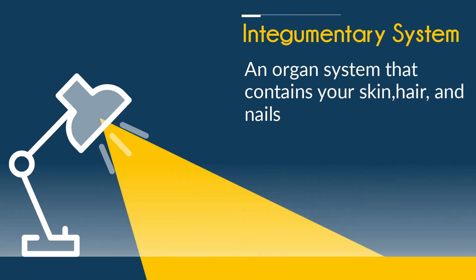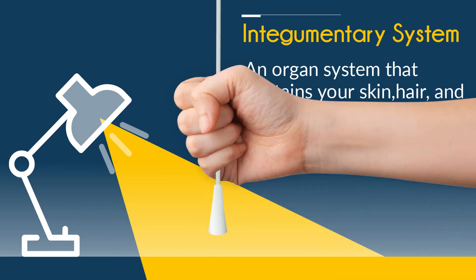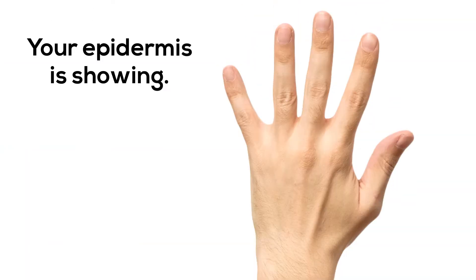Up first, the integumentary system — an organ system that contains your skin, hair, and nails. And here's what this looks like.